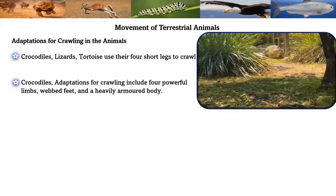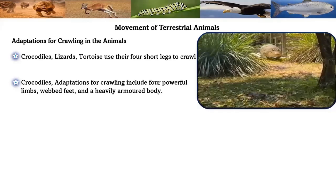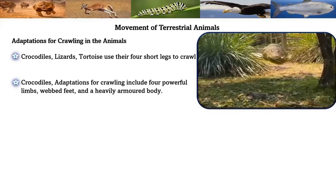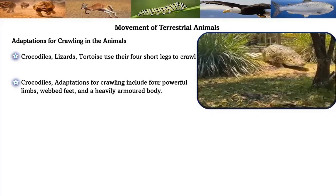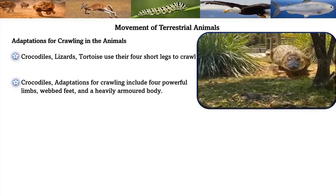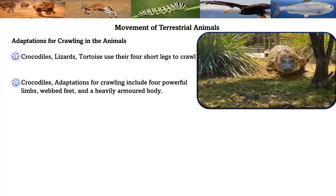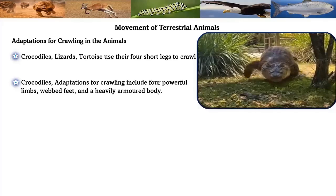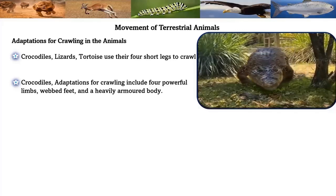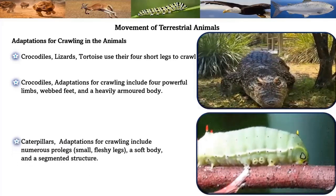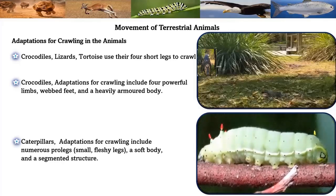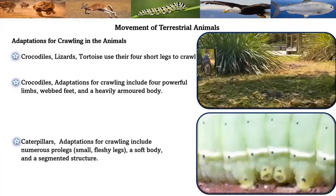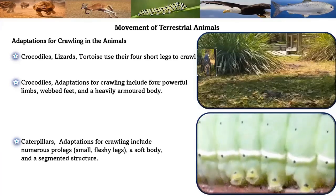Adaptation for crawling in animals: crocodiles, lizards, and tortoises use their four short legs to crawl. Crocodiles' adaptations for crawling include four powerful limbs, webbed feet, and a heavy armored body. Caterpillars' adaptations for crawling include numerous prolegs — small fleshy legs — a soft body, and a segmented structure.